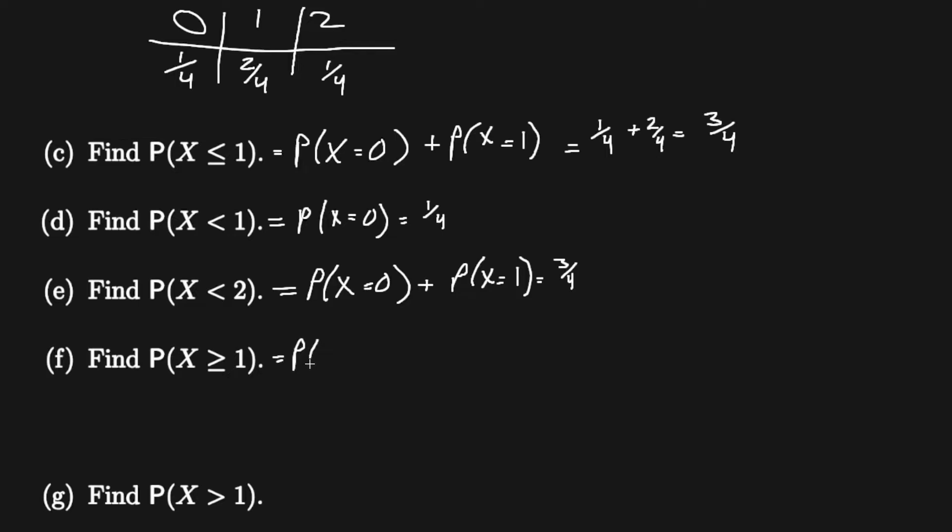Now part f is asking for the probability of X greater than or equal to one. That is probability of X equals one plus X equals two. And that is just two fourths plus one fourth, which is three fourths.